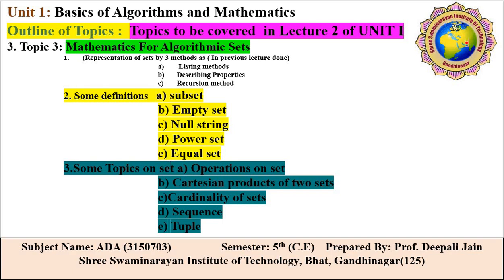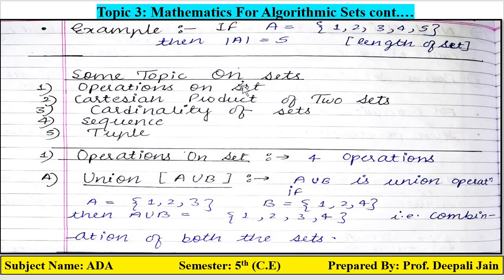Let's move to the third part of topic three: some topics on sets. Now you will learn a number of operations that are performed on sets. These include Cartesian product of two sets, cardinality of sets, sequence, and tuple. Let's see the first — operations on set. There are four operations you can perform.